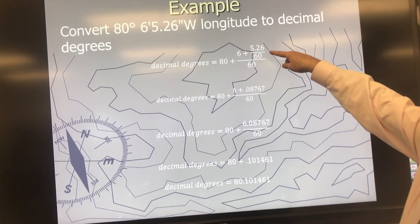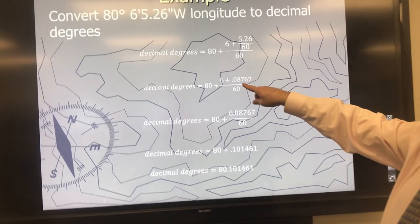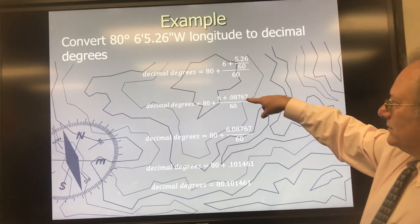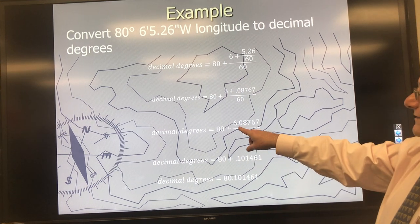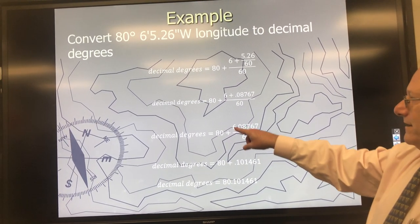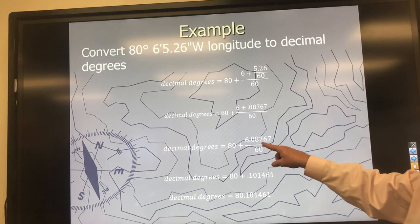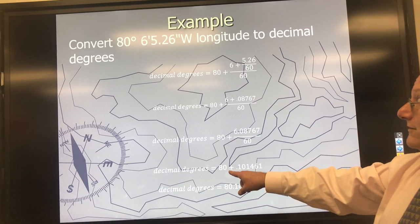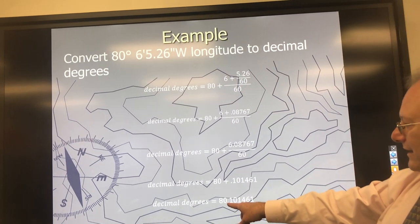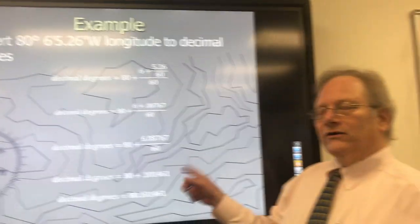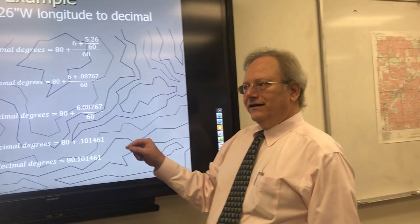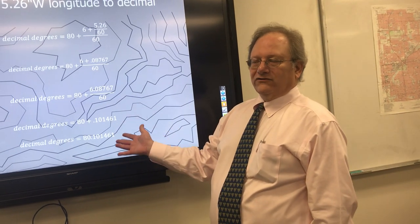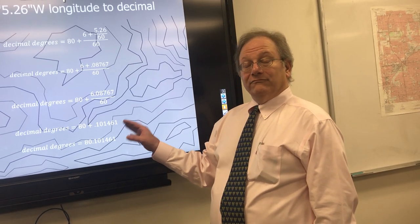If you take the seconds and divide them by 60, that gives you 0.08767 — it's actually a continuous decimal. If you add that to the minutes, you get 6.08767. Then you divide that by 60 to convert those minutes into decimal degrees, and you get 0.101461. You add that to your original degrees, and the answer is 80.101461. So what you're doing is converting the seconds to minutes, then the minutes to degrees, and adding them all together to get the decimal extension instead of minutes and seconds.